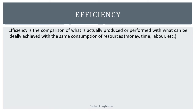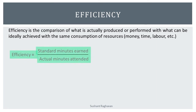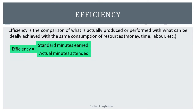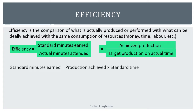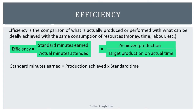Efficiency is the comparison of what is actually produced or performed with what can be ideally achieved with the same consumption of resources — money, time, labor, etc. Efficiency equals standard minutes earned divided by actual minutes attended, or equals achieved production divided by target production on actual time. Standard minutes earned equals production achieved multiplied by standard time.